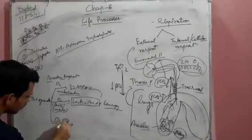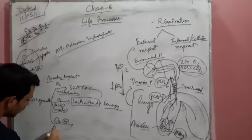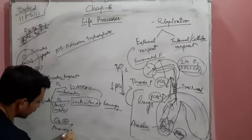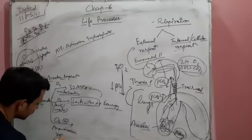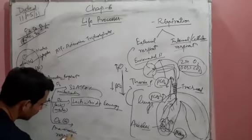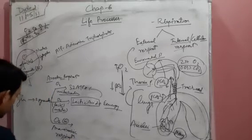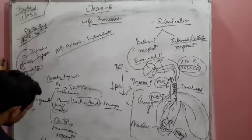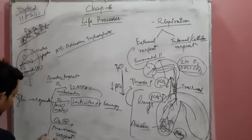The third condition is the total absence of oxygen — that is called anaerobic respiration. It also occurs during fermentation reactions, which take place with the help of yeast.